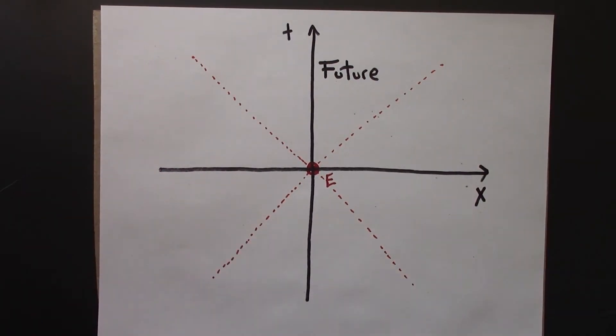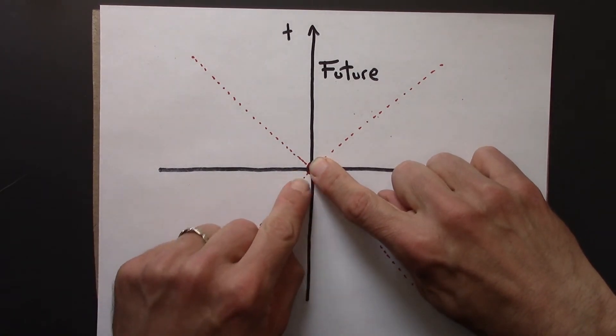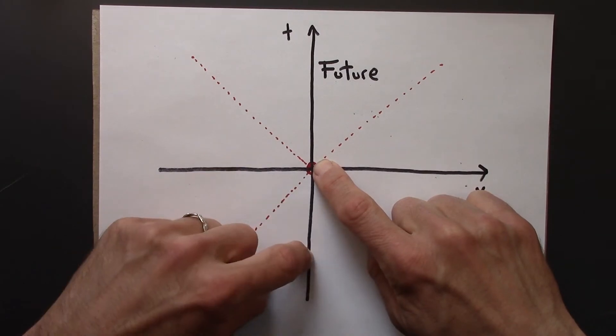So here, if I had an event here, say, these would also be causally connected, right? Because this is also time-like, because delta t is greater than delta x.